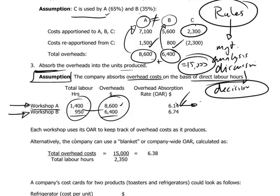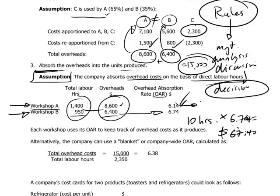Similarly, if Workshop B has 950 hours against overheads of $6,400, this implies an overhead absorption rate of $6.74. So for every hour worked in Workshop B — say 10 labor hours are worked in the first morning of a given period — the production manager would multiply 10 hours by $6.74, and $67.40 of overheads would have been absorbed. What we've calculated here is the overhead absorption rate, and each workshop keeps track of its costs according to its specific overhead absorption rate.